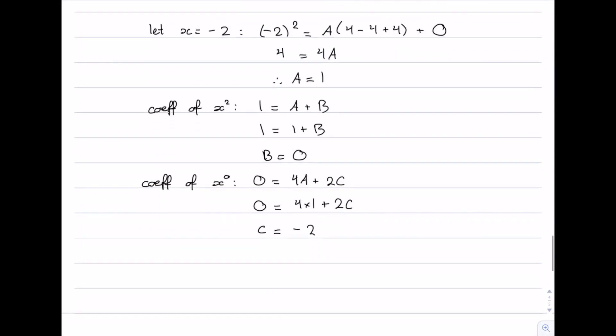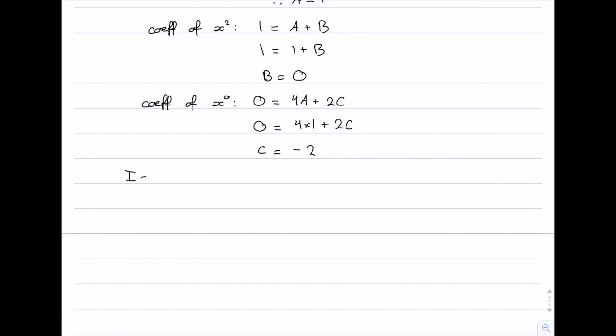So now we can write our integral in the following way. It's the integral of A, which is 1, over x+2, plus Bx+C. Well B was equal to 0, so it's 0 times x, which is 0. And then we have C, which is -2, divided by x²+2x+4, dx.